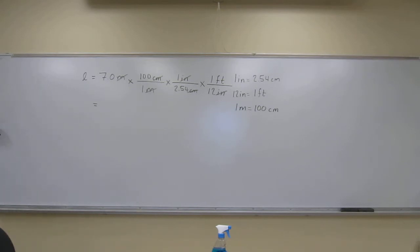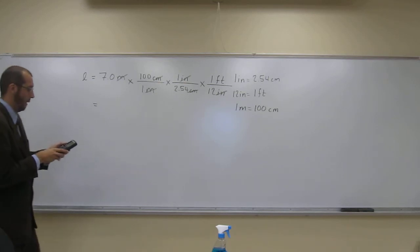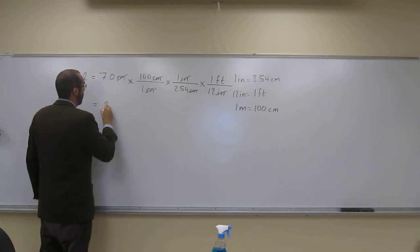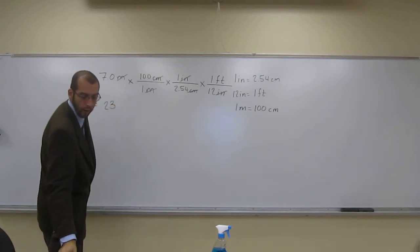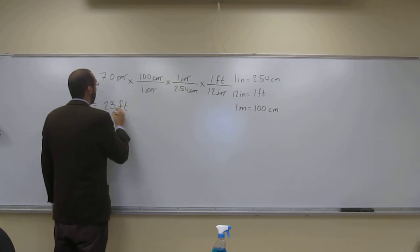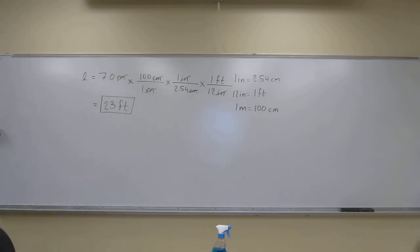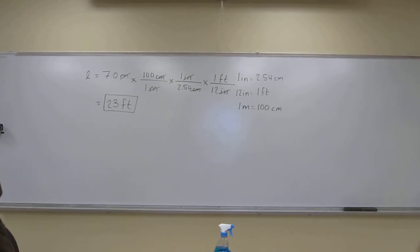So how many significant figures is this going to go to? Two, right? Because that was the only number that was presented in the problem. So what do I do? Seven times 100 divided by 2.54, and then divide that by 12. So this to two significant figures is 23. Does that make sense? Yeah. So you've got to figure out that conversion factor that you need, that metric to metric.